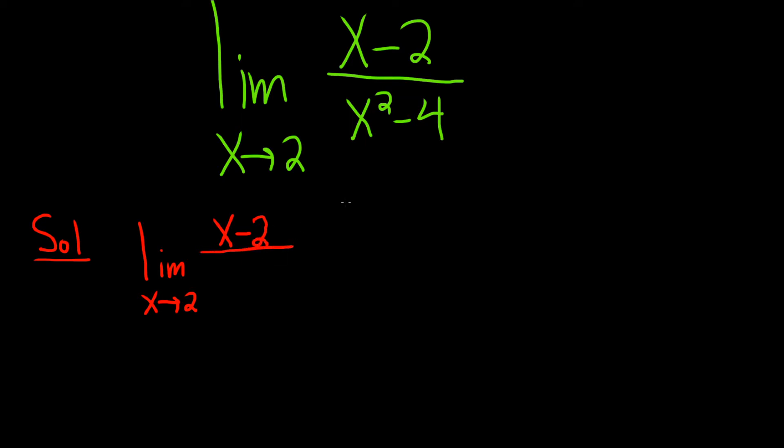And the bottom piece here is actually the difference of squares. So whenever you have x squared minus 4, that's really x minus 2 times x plus 2.